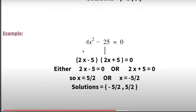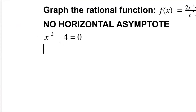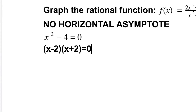Look at this example: four x power two minus twenty-five. What is the square root of four? Two. What is the square root of twenty-five? Five. So it factors as two x minus five times two x plus five, then solve either or. Back to our problem: x power two minus four equals zero factors as x minus two times x plus two equals zero.